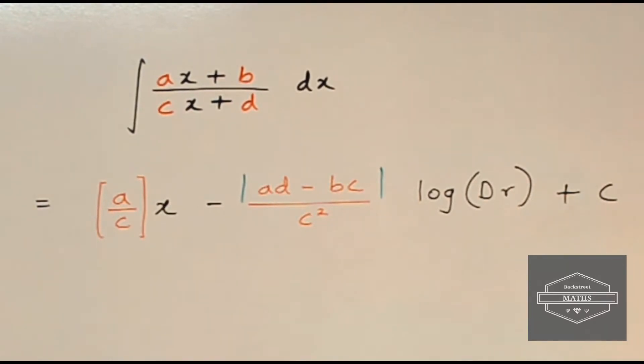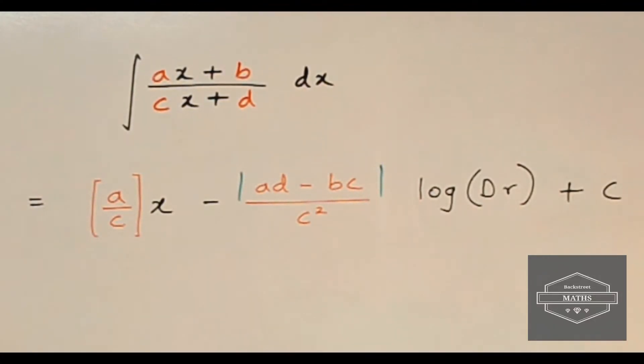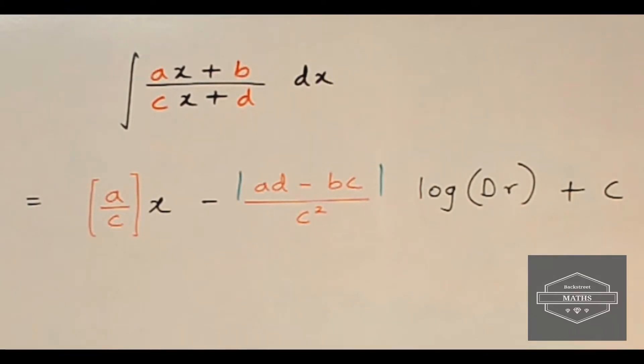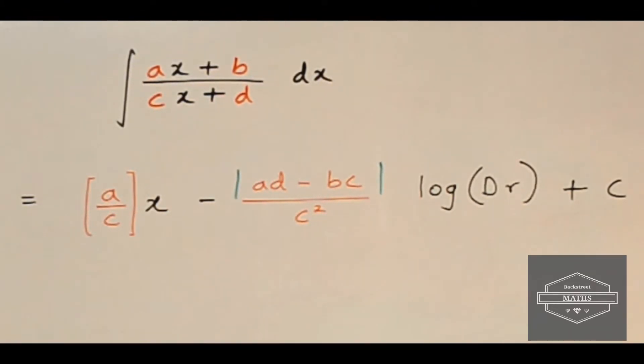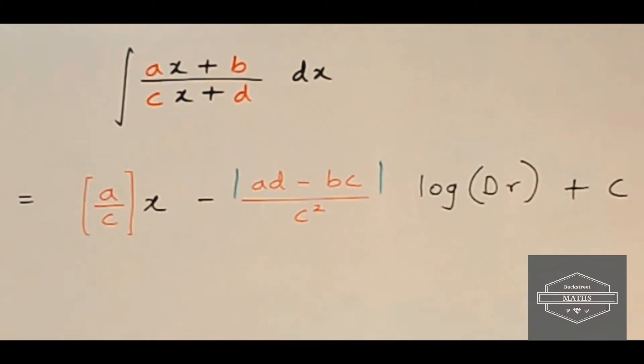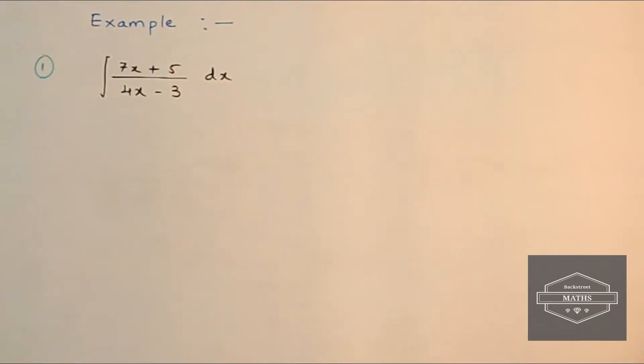So, integral of the form ax plus b upon cx plus d is given by a upon c into x minus mod of ad minus bc upon c square into log of denominator. And that's our shortcut for today's video. And now let's quickly solve some questions based on this type.